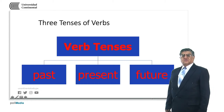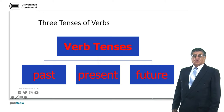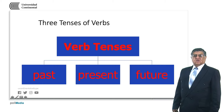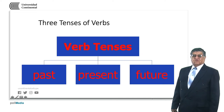In English, we have three main tenses: the past, the present, and the future. Within each of these, we have some variations — the past continuous, the past perfect, the present continuous, the present perfect, the future continuous, future perfect, future perfect continuous, etc.